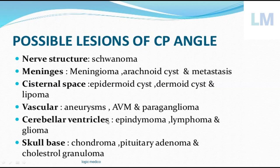Within the cerebral ventricles, there can be an ependymoma from ependymal cells, lymphoma from lymphoid tissue, or glioma from glial supporting cells. From the skull base including bones: chondroma from cartilaginous tissue, pituitary adenoma where the pituitary gland massively enlarges, cholesterol granuloma — extremely rare but possible. The most common CP angle tumor is acoustic neuroma or acoustic schwannoma, arising from the Schwann cells of the acoustic nerve.